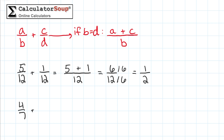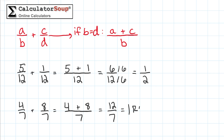Next, let's add the fractions 4 sevenths and 8 sevenths. Again, add the top numbers together and put the result over the common denominator. 4 plus 8 is 12, so place the 12 over 7 for our answer of 12 sevenths. We can also change this fraction to a mixed number. Divide the numerator by the denominator using long division with remainders: 12 divided by 7 is 1 remainder 5. Write down 1 as the whole number result and use 5 as the new numerator over 7. Our final simplified answer is 1 and 5 sevenths.